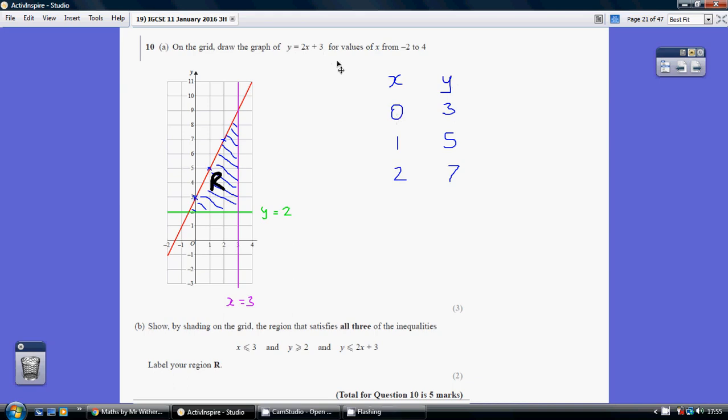So when x is 0, 2 lots of 0 is 0, add 3 is 3. So when x is 0, y is 3. That's generated our first coordinate, 0, 3. Zero along the corridor, 3 up the stairs.